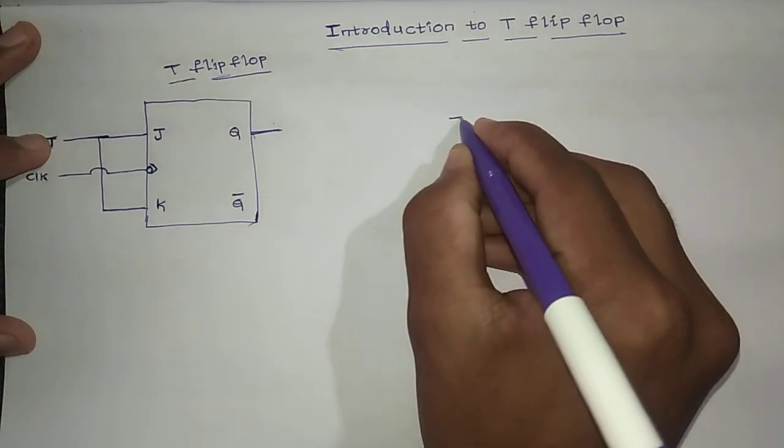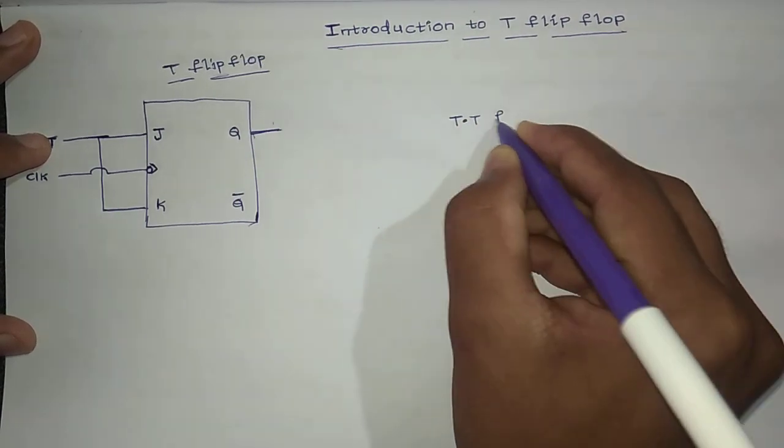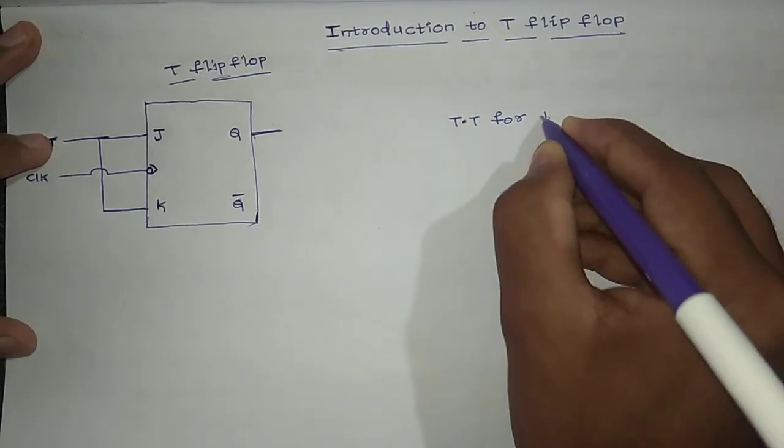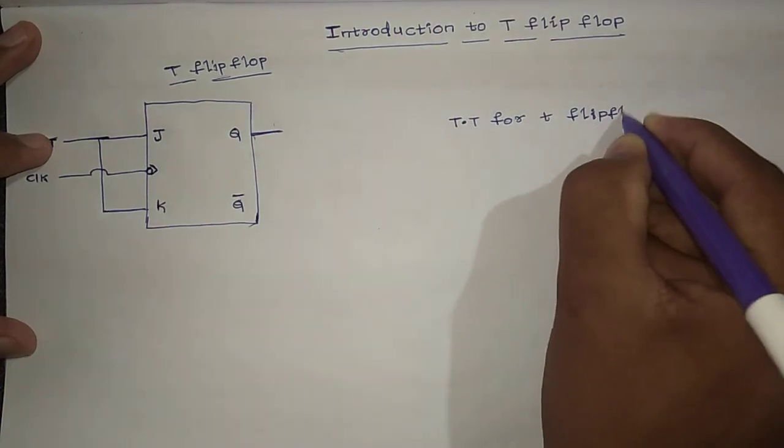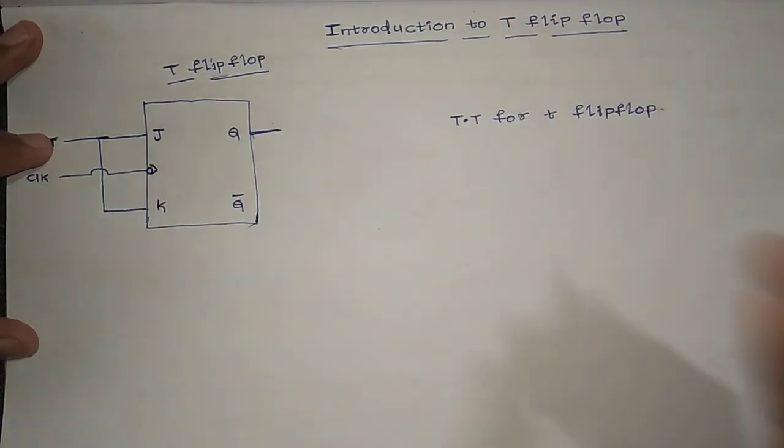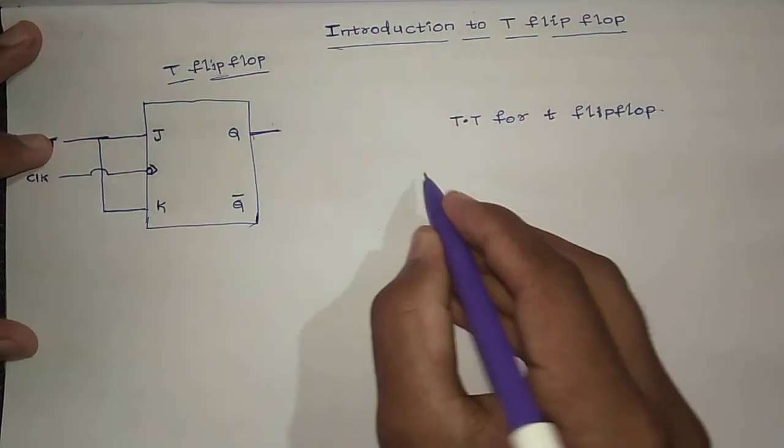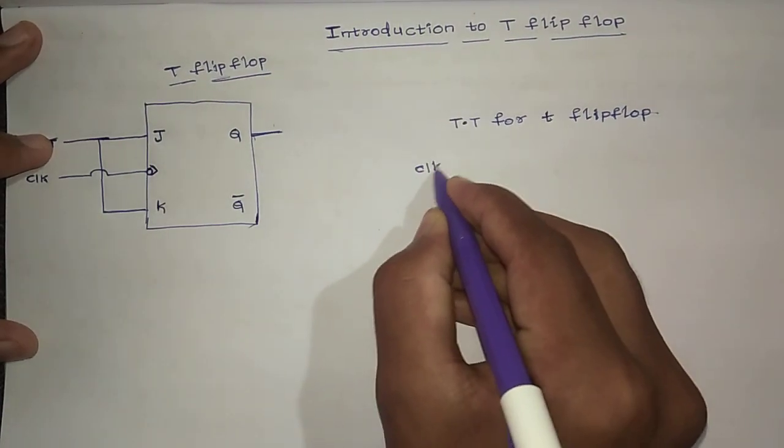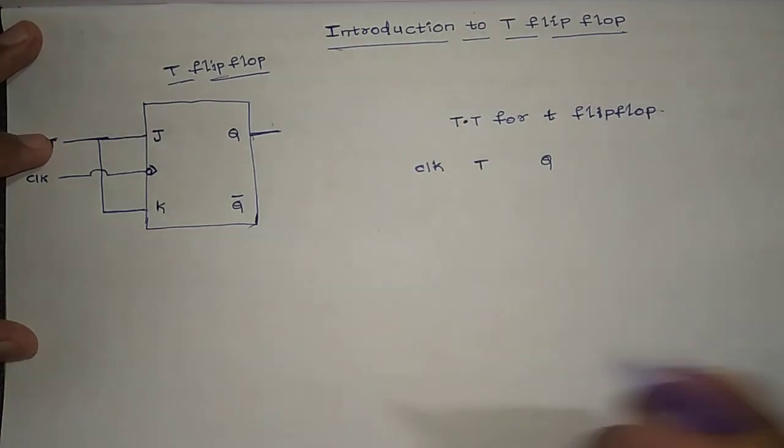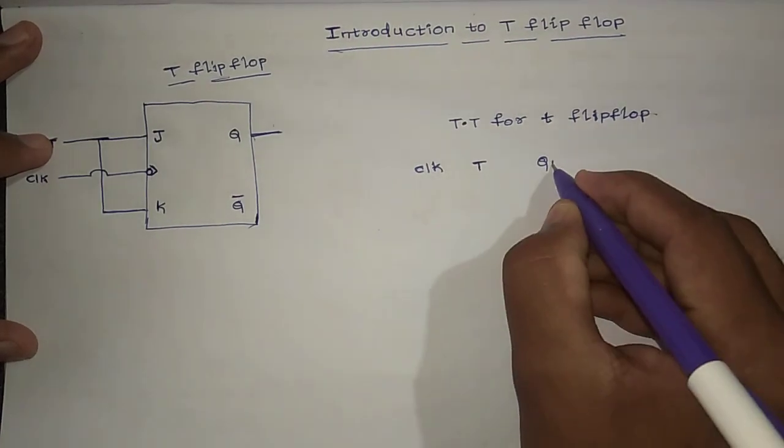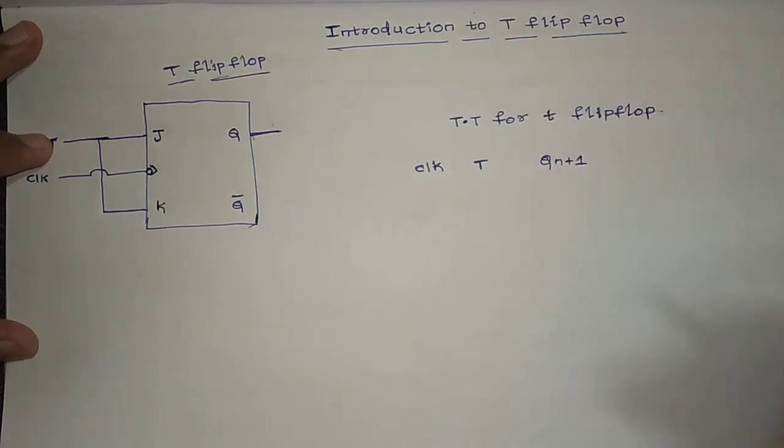If you prove truth table for T flip-flop, you can observe the characteristic. If you observe the characteristic, we input the clock is toggle condition Q output. We can write it as next state output.